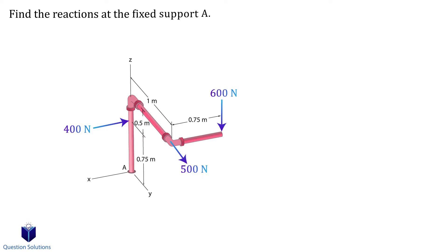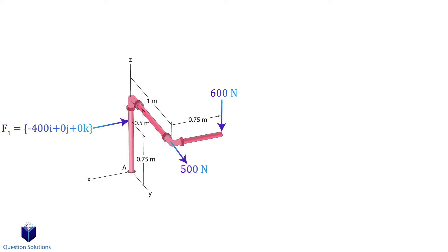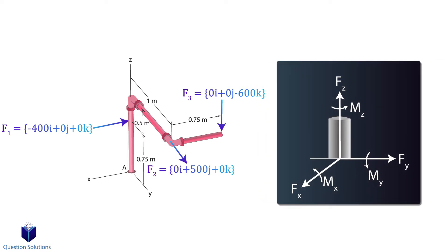In this problem we need to find the reactions at the fixed support A. The first step is to express each force in Cartesian form. The 400 newton force is along the x-axis so it only has an i component — it's negative because it faces right while our x-axis faces left. The 500 newton force is along the y-axis so it only has a j component. Lastly, the 600 newton force is along the z-axis so it only has a k component — it's negative because it's downwards while the z-axis faces upwards.